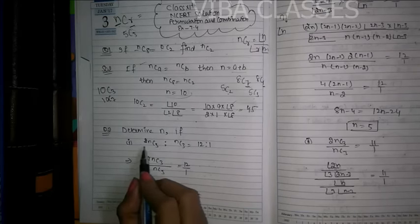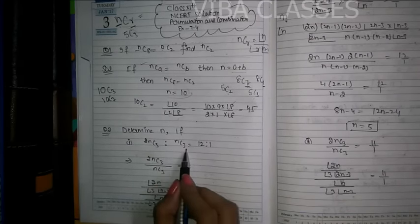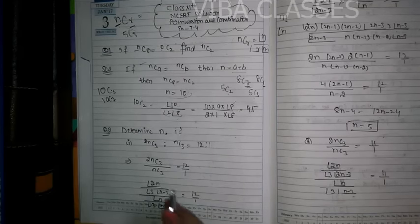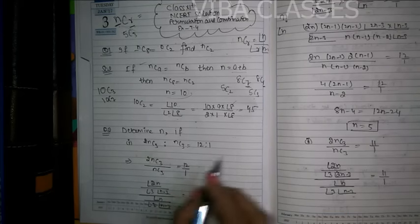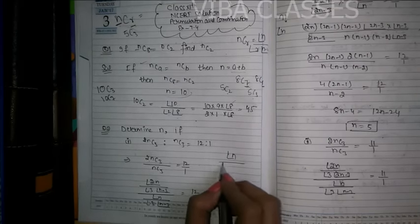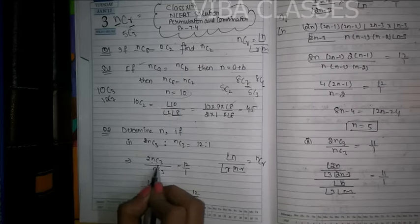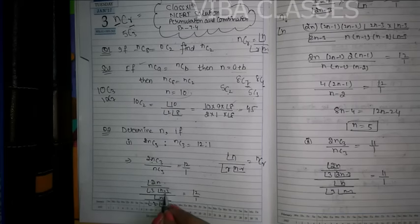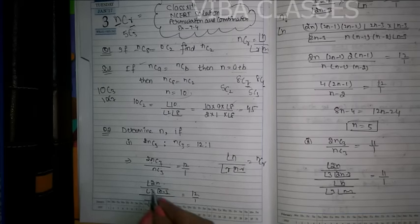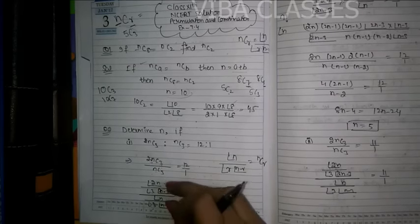Question number 2: Determine n if 2nC3 ratio nC3 equals 12 ratio 1, i.e., this upon this is equal to 12 by 1. The formula for NCR is factorial n divided by factorial r into factorial (n minus r). So 2nC3 gives us factorial 2n divided by factorial r into factorial (2n minus 3). Similarly nC3 gives factorial n divided by factorial r into factorial (n minus 3). This equals 12 upon 1.